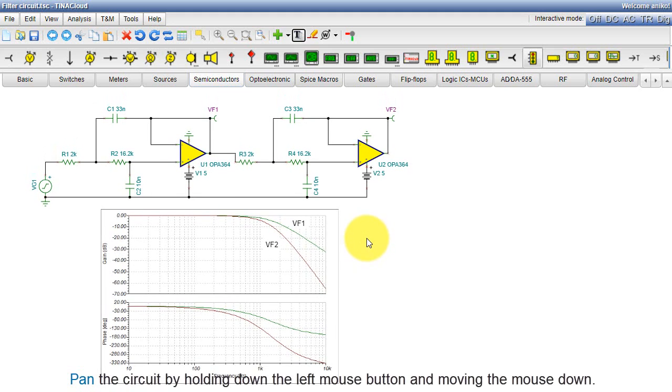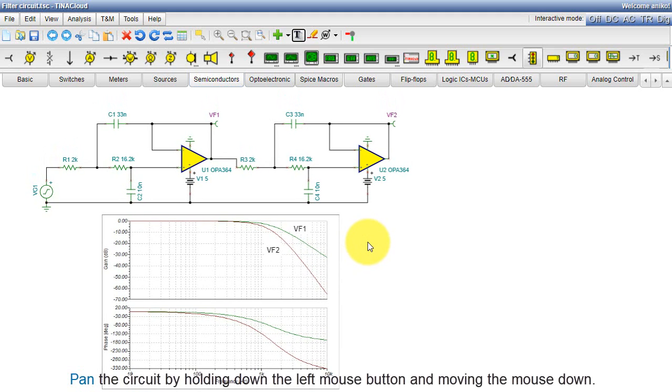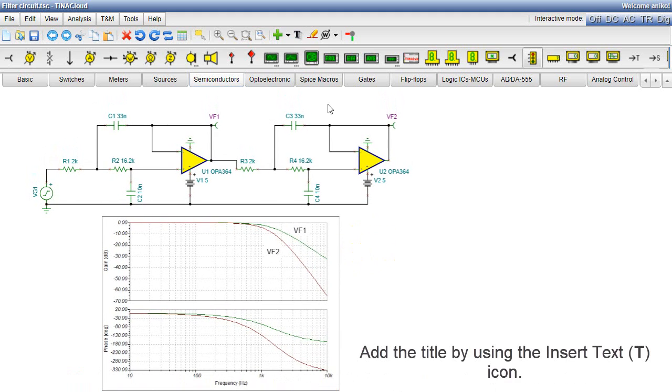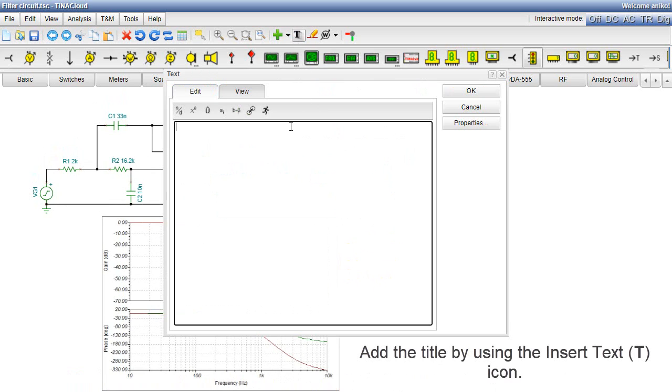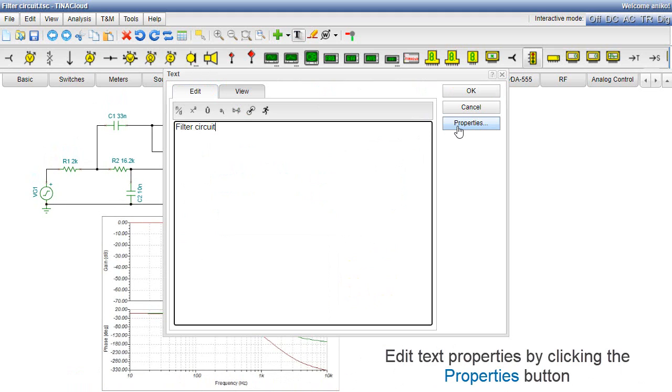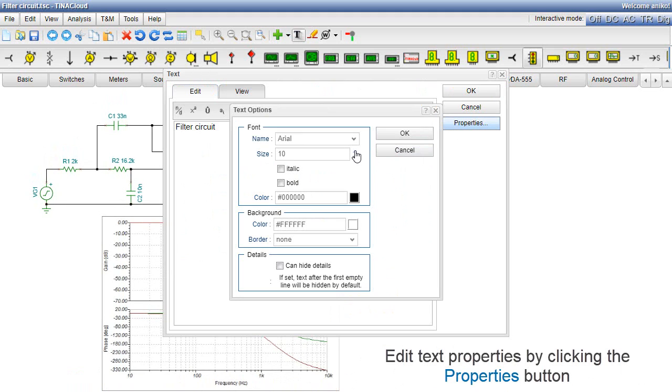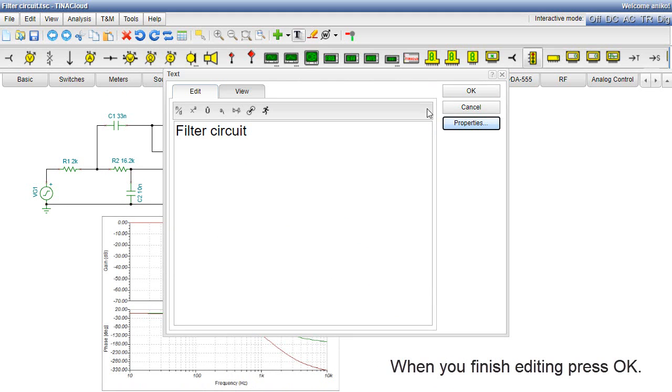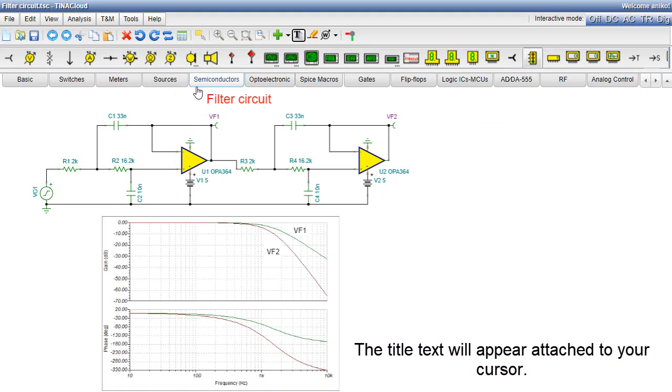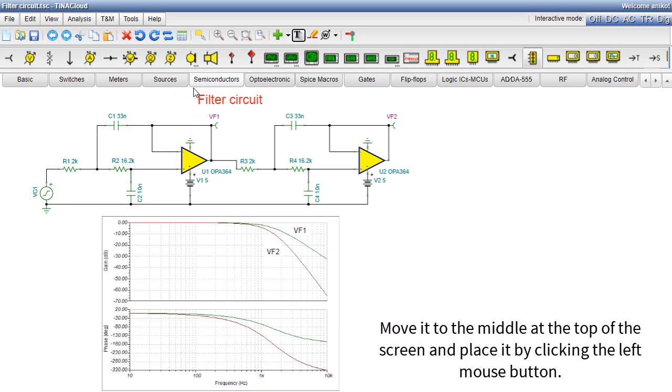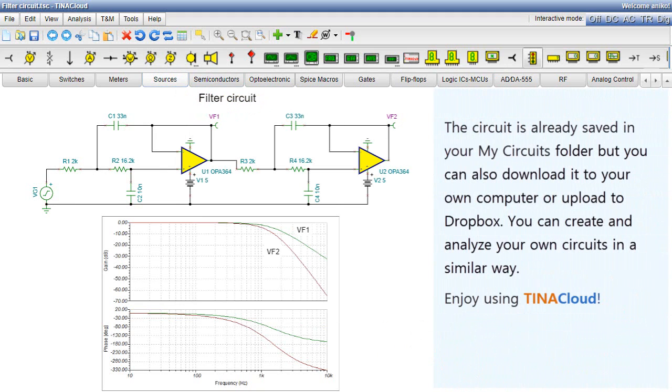Pan the circuit by holding down the left mouse button and moving the mouse down. Add the title by using the Insert Text T icon. Edit Text Properties by clicking the Properties button. When you finish editing, press OK. The title text will appear attached to your cursor. Move it to the middle at the top of the screen, and place it by clicking the left mouse button. The circuit is already saved in your My Circuits folder.